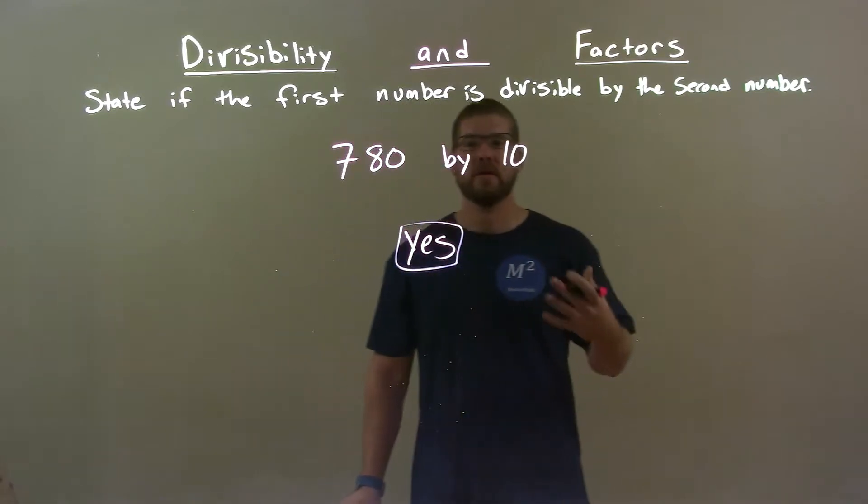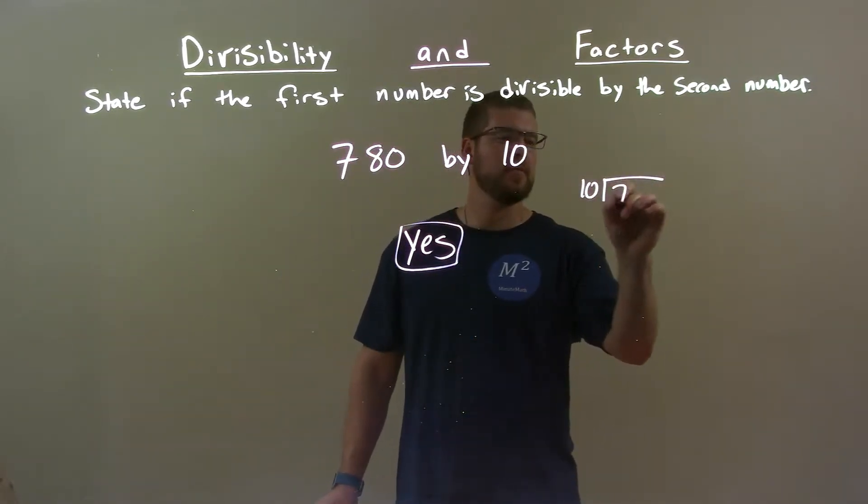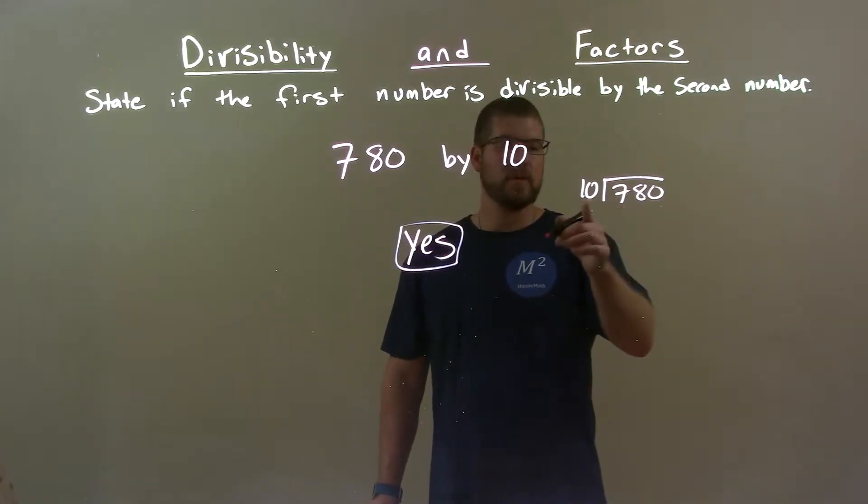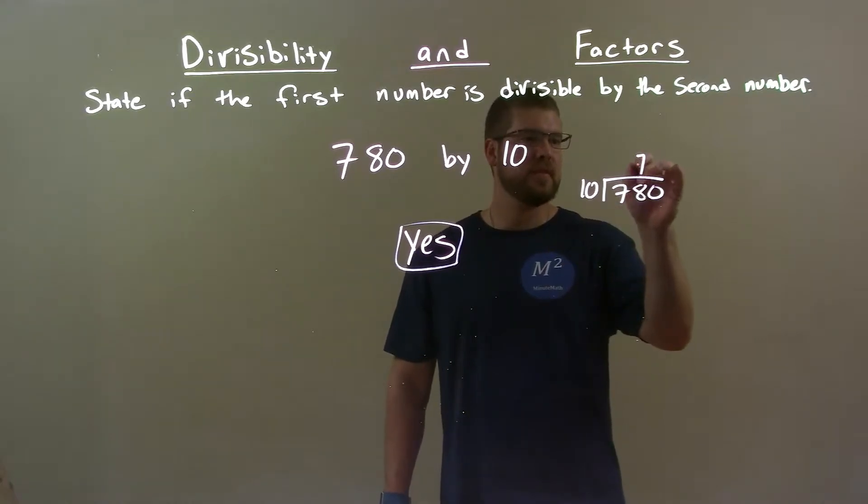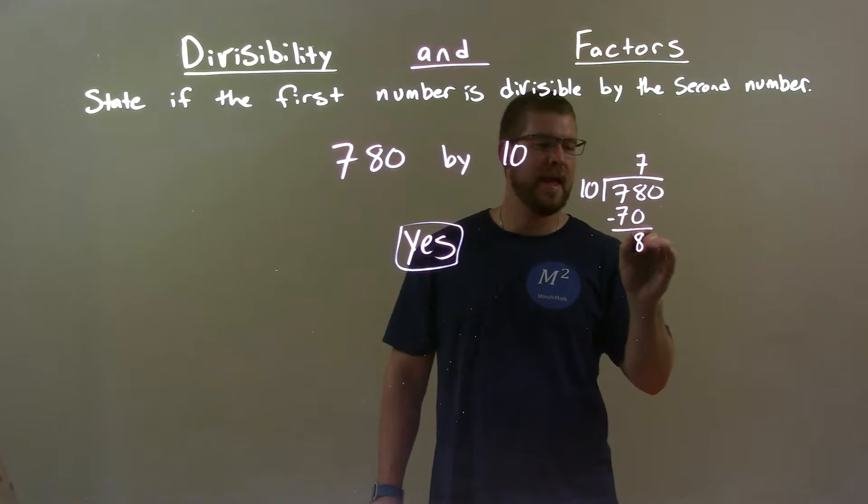But how else can we show this? Well, let's look at long division. Does 10 go into 780 evenly? 10 go into 7? No, but 10 goes into 78, or 70, 7 times. 7 times 10 is 70. Subtract the 2, we get an 8.